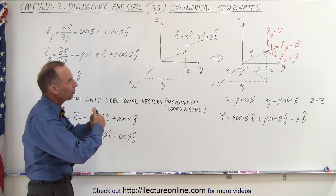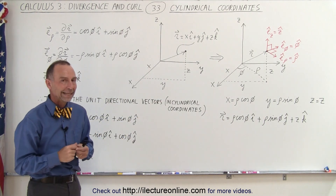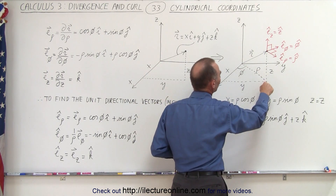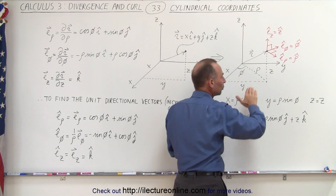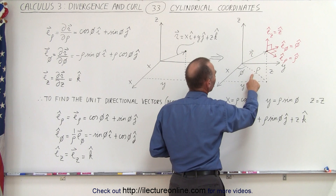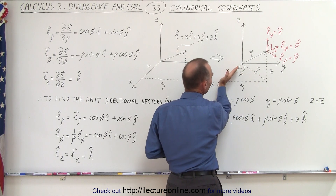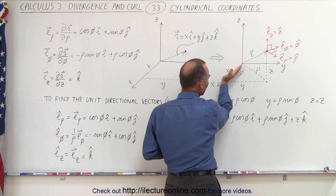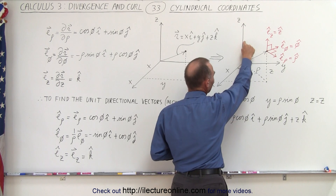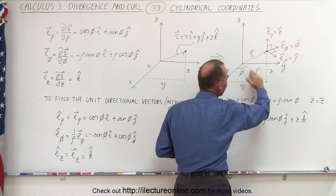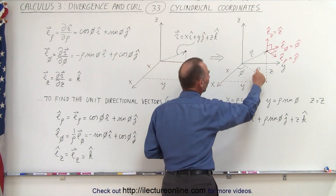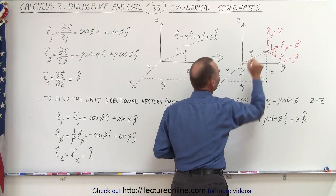But what happens when we try to convert that to cylindrical coordinates? In cylindrical coordinates, a point in space is defined by the distance along the x, y plane from the z-axis to that point — we call that rho. Then we have an angle measured from the positive x-axis to that position, then we have the angle phi, and then we have the height from the x, y plane to the point. So in cylindrical coordinates, we use rho, phi, and z as the coordinates of that particular point.